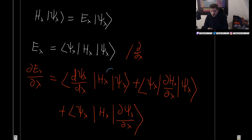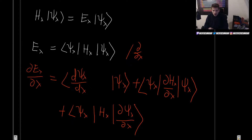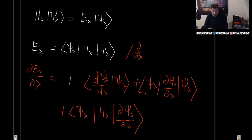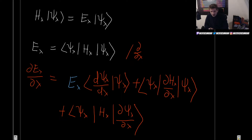We can see that we now have the Hamiltonian acting on the wave function, which gives the energy. So we can replace that and pull the energy outside of the inner product, because it's simply a scalar — it doesn't depend on the integration variable. And we can do the same for the last term: since the Hamiltonian is Hermitian, we can let it act on the bra wave function and once again get the energy outside.